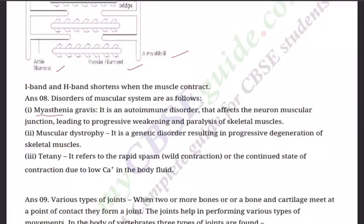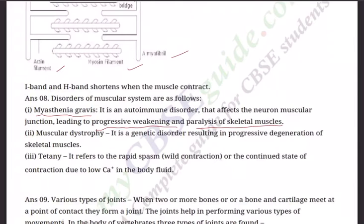Question eight: Disorders of the muscular system. First — myasthenia gravis, an autoimmune disorder that affects the neuromuscular junctions, leading to progressive weakening and paralysis of the skeletal muscles. It is a very severe disease; a person affected may not be able to lift a glass of water because of the progressive weakening of the muscles.